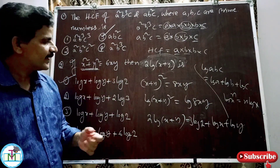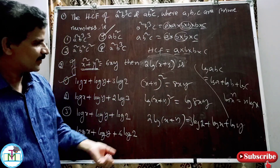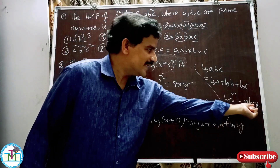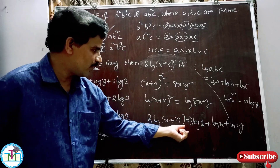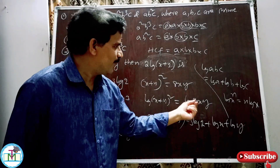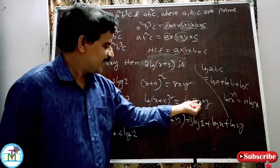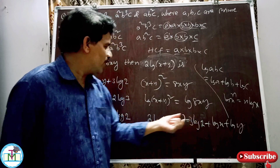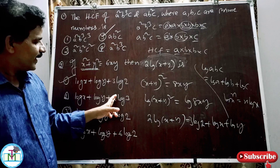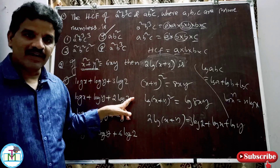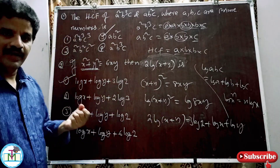To recap: apply the (a+b)² formula, then use log(xⁿ)=n·log(x) so the power 2 becomes the coefficient. Then expand using log(ABC) = log A + log B + log C, giving log 8 + log x + log y. Since 2³=8, we get 3log 2 + log x + log y. Option 1 is correct.